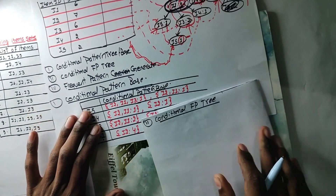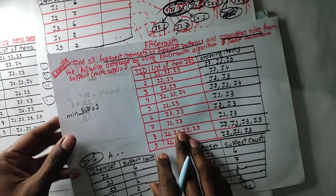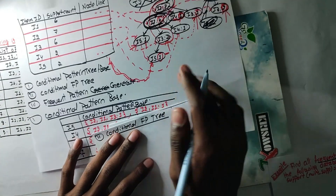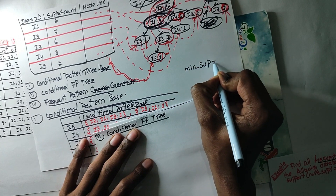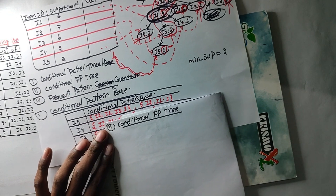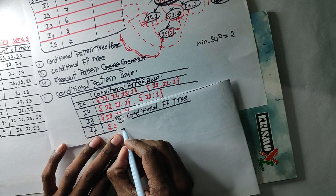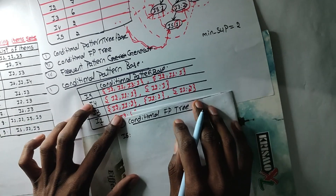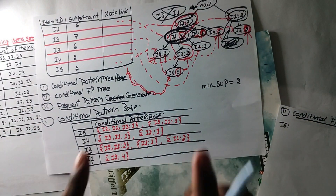This is 3. This is the question. The question is: minimum support is 2. So minimum support is 2. This is the question. I5 is going to do I5. So every time I have to say, if you use 2 to this.